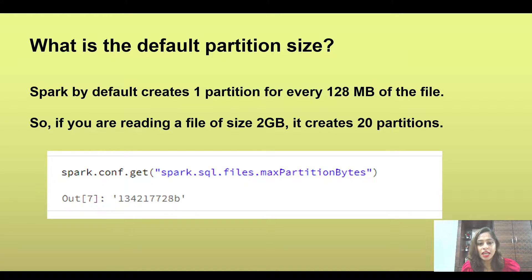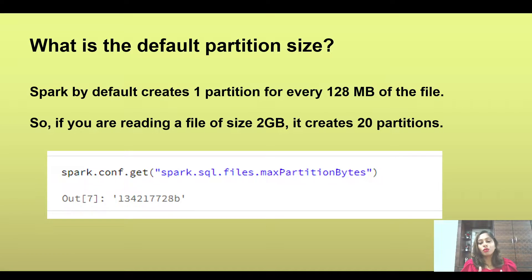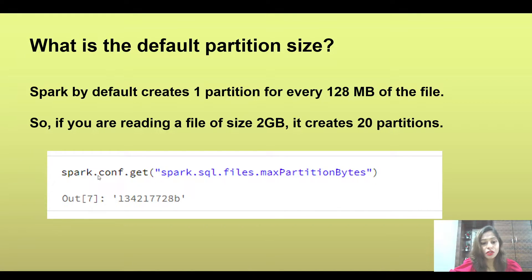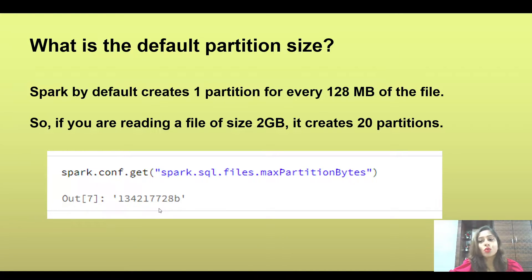Since one partition is 128 MB, a 2 GB file will by default create 16 partitions. There is also an option to see the maximum partition size using the command: spark.conf.get maximum partition bytes, which returns the value in bytes equivalent to 128 MB.